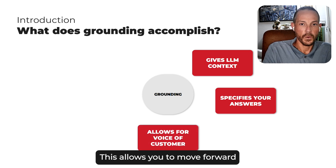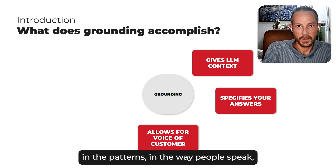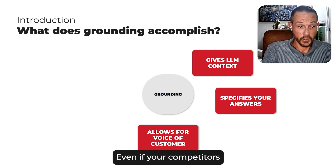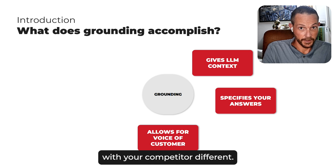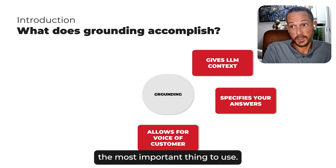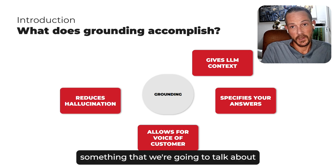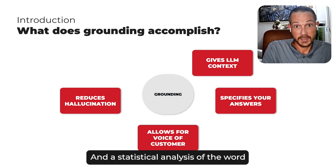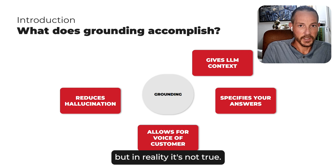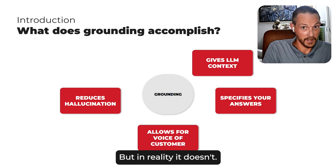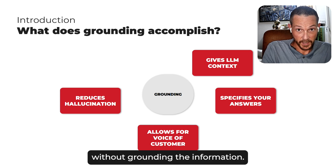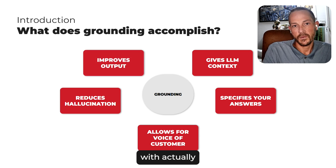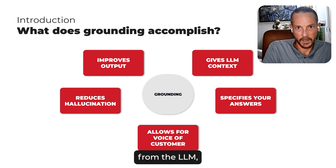Grounding also allows for voice of the customer. It lets you use actual data, the patterns and the ways people speak, which are specific to your company and your product. Even your competitors will get different reviews and interactions. So voice of customer data is the most important thing to use. Grounding also reduces hallucination — where the model just makes a statistically sensible response that isn't actually true. Mathematically it makes sense, but in reality it doesn't. That's the danger of using these tools without grounding. And it just improves output overall — if you're having a problem getting discernible information from an LLM, grounding will fix that.